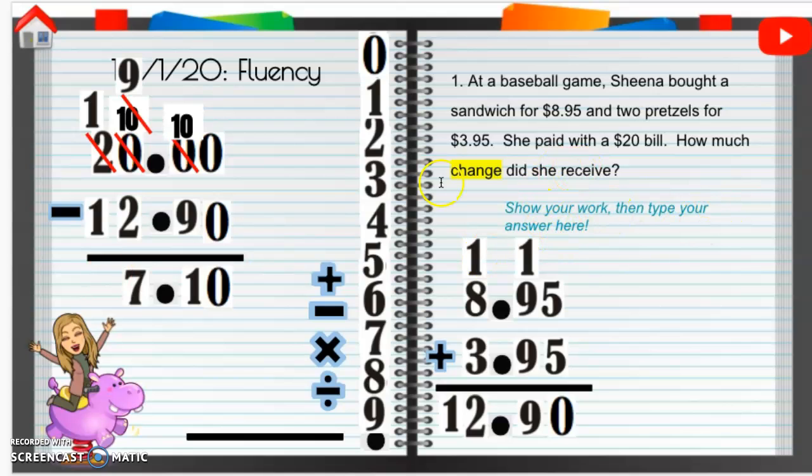So how much change did she receive, or how much did she get back? Well, 7 and 10 hundredths, or $7.10. So I'm going to label this with the dollar sign, $7.10, is what she will get back. Or you can say, is her change. And that is our answer.